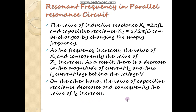Now we will see the resonant frequency in the parallel resonance circuit. The inductive reactance XL equals 2 pi FL and the capacitive reactance XC equals 1 upon 2 pi FC. Both these values change if we change the supply frequency. As the frequency increases, the value of XL increases, and consequently the value of ZL also increases. As a result there is a decrease in the magnitude of current IL, and this current lags behind the voltage V. On the other hand, if the frequency increases, the capacitive reactance decreases and consequently the value of IC increases, because in a capacitive circuit frequency and current are directly proportional.